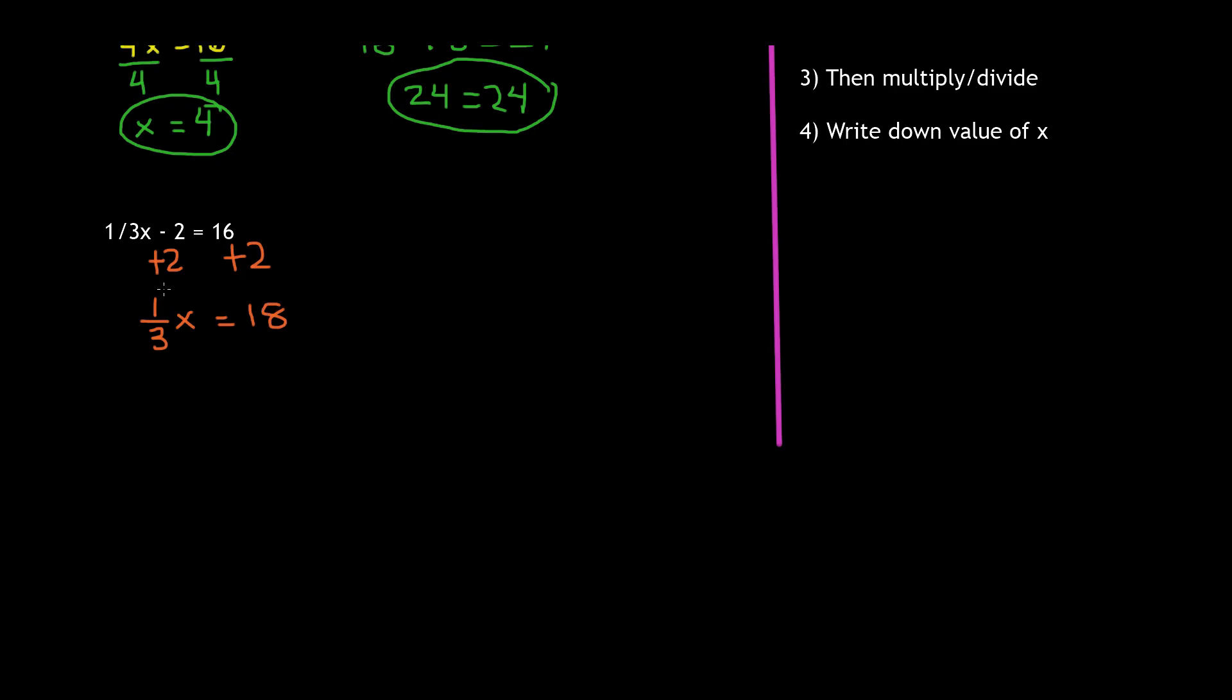Now, 1/3 is the same thing as 1 divided by 3. So in order to get the division, we have to eliminate 1/3, right? So we're going to have to multiply. But we're not going to multiply both sides by 1/3. We're going to multiply it by its reciprocal. Reciprocal is basically turning the fraction upside down. So if you turn 1/3 upside down, you get 3 over 1. So we'll be multiplying both sides by 3 over 1. So these cancel each other out. So we're left with x is equal to 18 times 3 over 1. So if we go ahead and do this, 18 over 1 times 3 over 1 is equal to 54 over 1, which is the same thing as 54. So x is equal to 54.